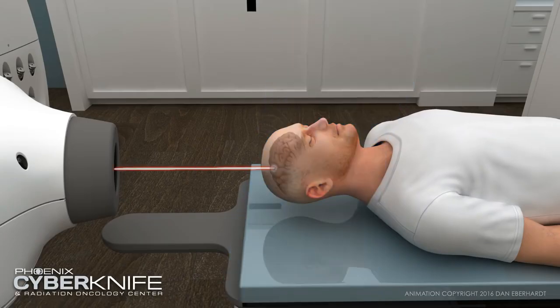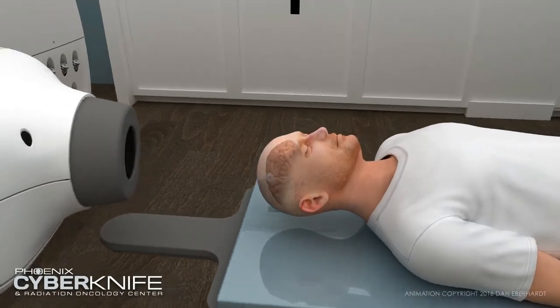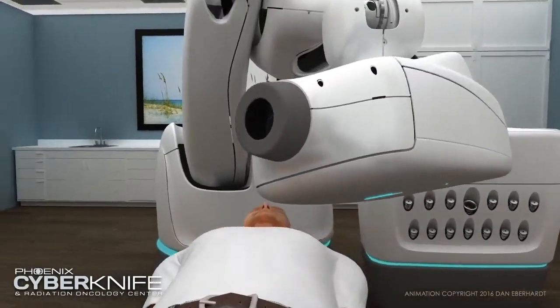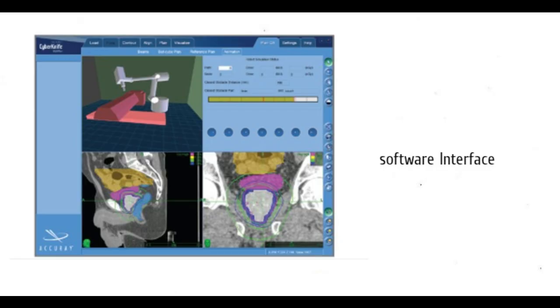The sixth component is a typical imaging system. The imaging system, consisting of two KV X-ray sources and detectors, takes images of the patient throughout the treatment. The seventh component is the combination of software which helps to focus on the therapy with image-guided precision.